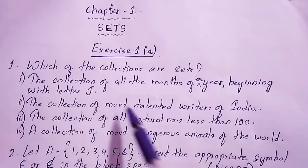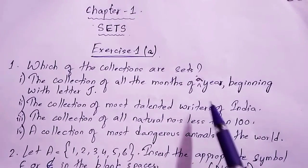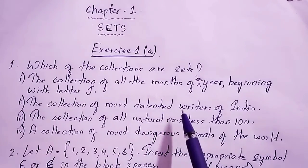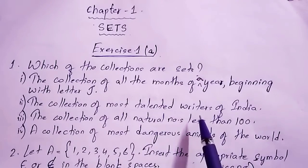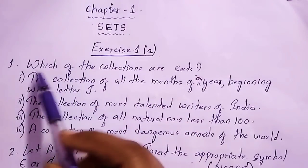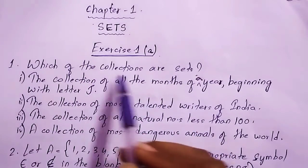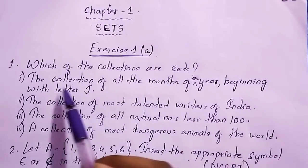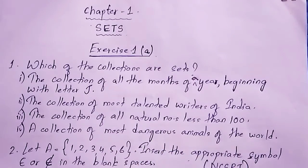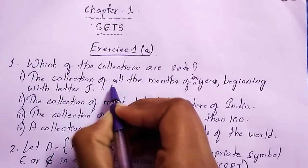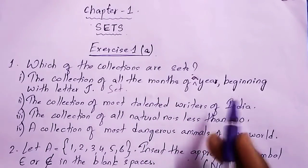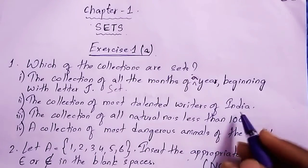But if you talk about the collection of most talented writers of India, it depends on your choice — everyone's opinion will be different. So this is not a well-defined collection of objects, and therefore this is not a set. So for Question 1: the collection of months beginning with J is a set, and the collection of most talented writers of India is not a set.